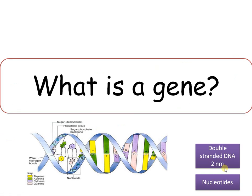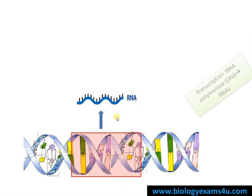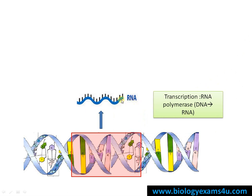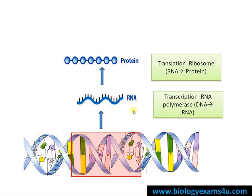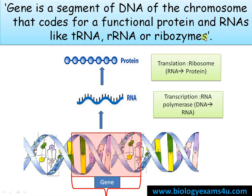Now the question: what is a gene? A gene is a segment of DNA that is capable of being transcribed to an RNA. The formation of RNA from DNA is called transcription, and that RNA is further translated to form a protein. Simply, a gene is a segment of DNA — a part of DNA on the chromosome that codes for a functional protein.